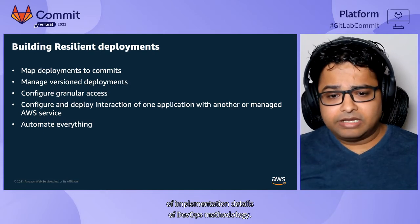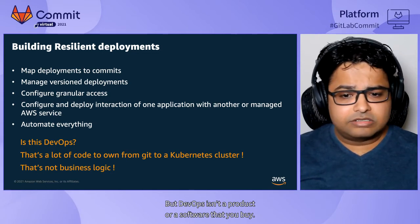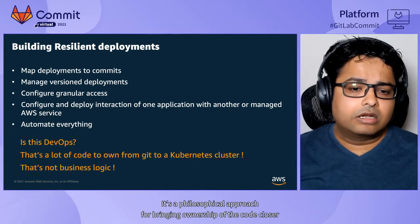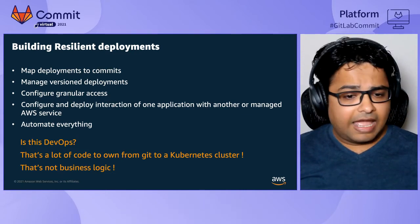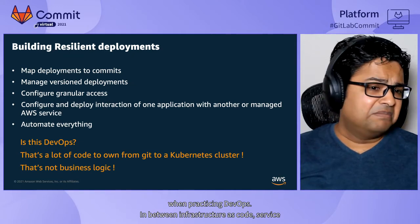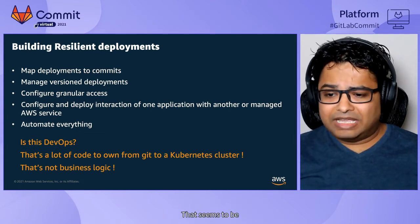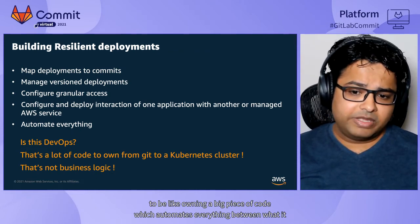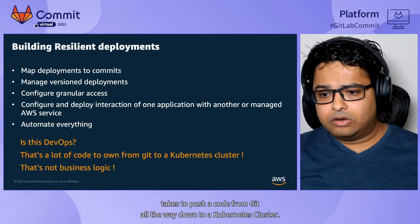That leads to a lot of implementation details of DevOps methodology, but DevOps isn't a product or software you buy — it's a philosophical approach for bringing ownership of the code closer to the developers that actually write it. These are all the aspects and things that need to be automated when practicing DevOps: infrastructure as code, service code, Dockerfiles, Kubernetes manifest files. That all amounts to owning a big piece of code that automates everything from pushing code in Git all the way down to a Kubernetes cluster.